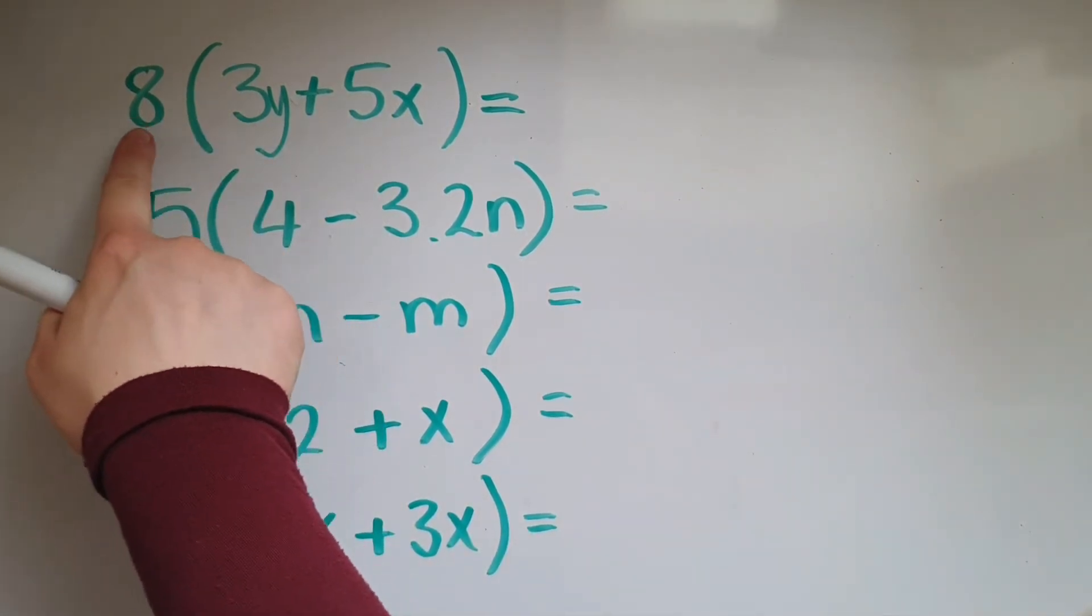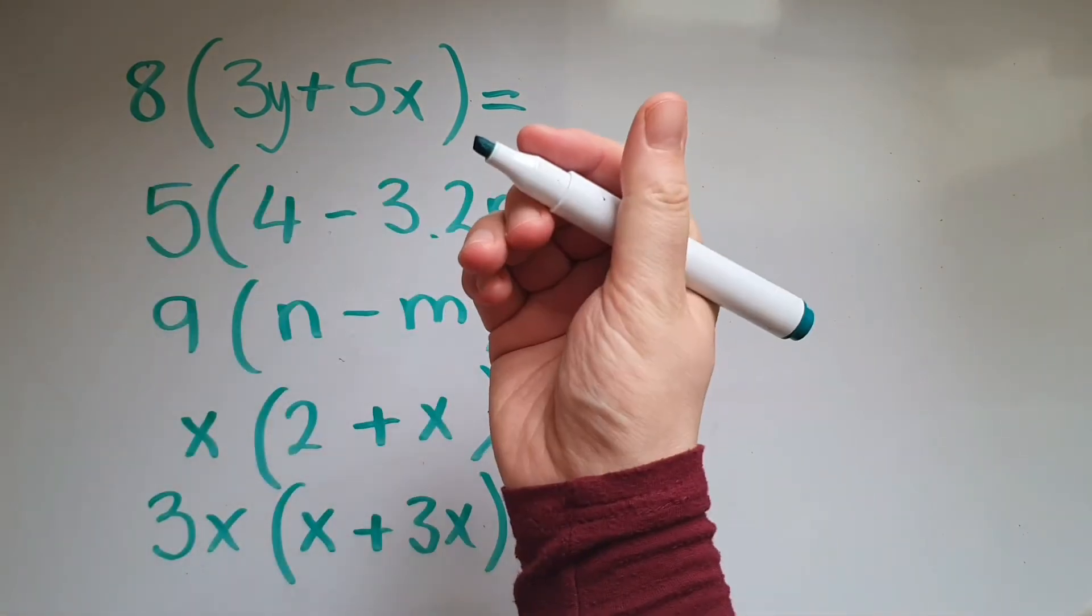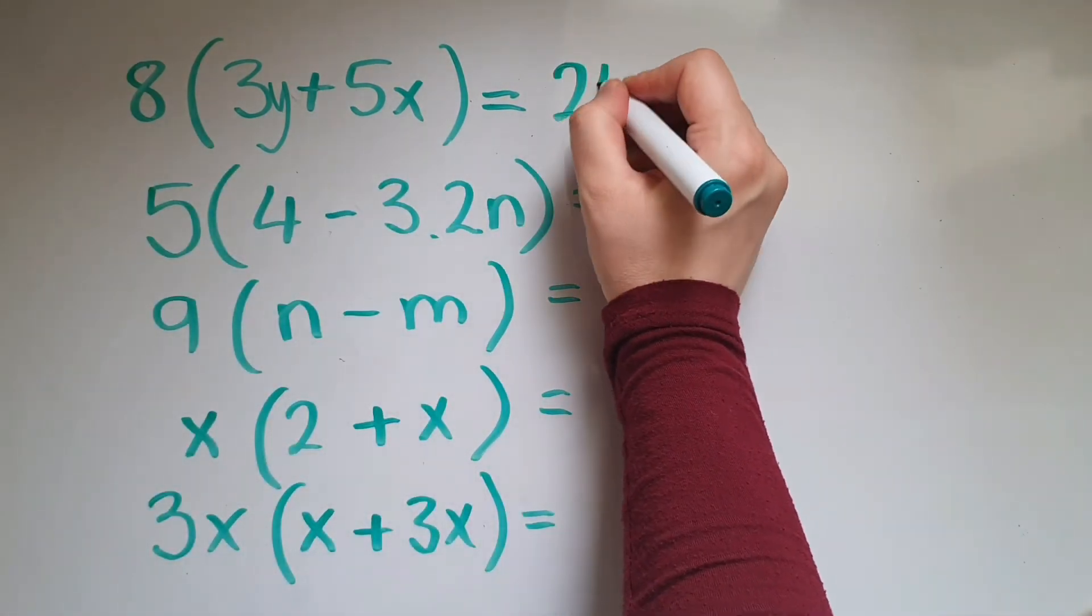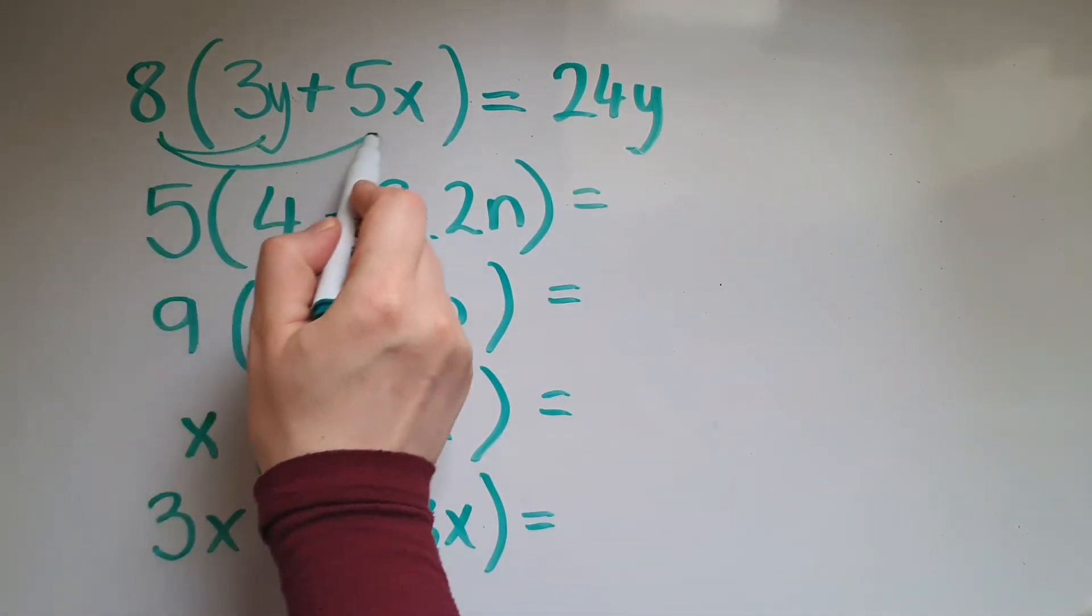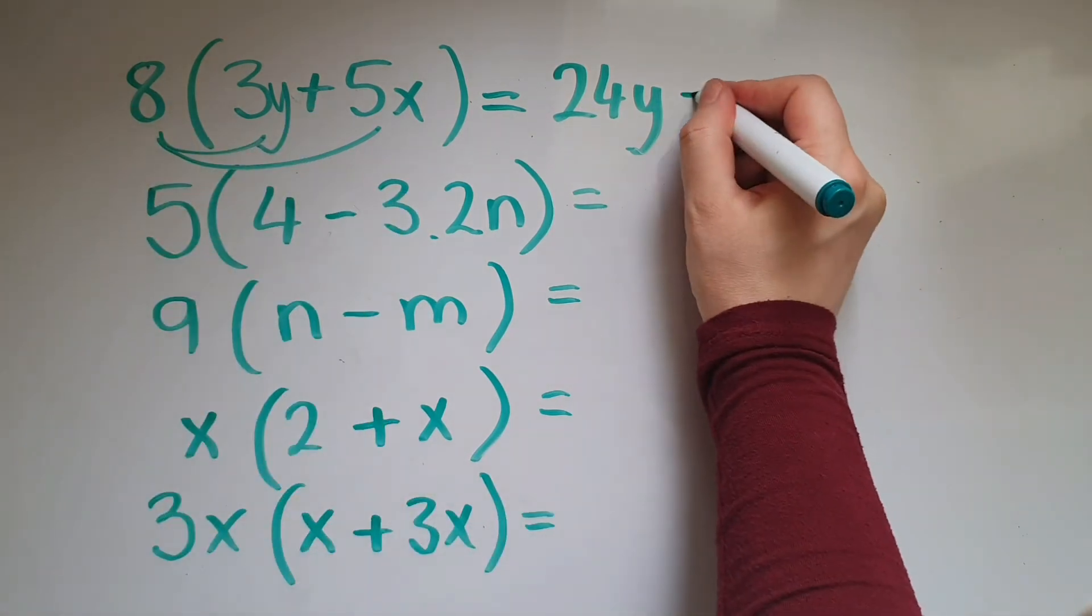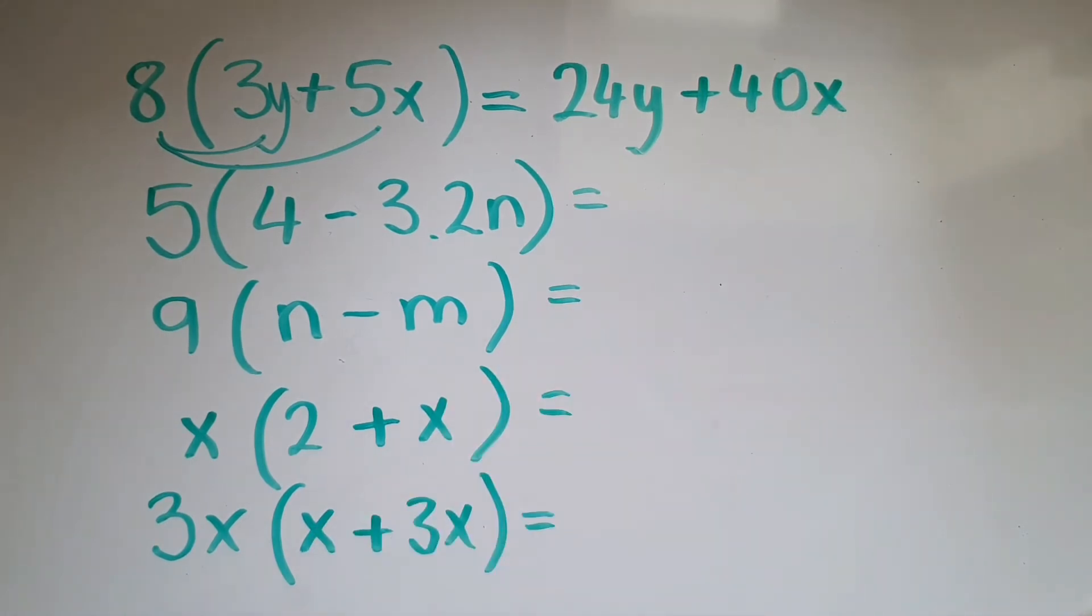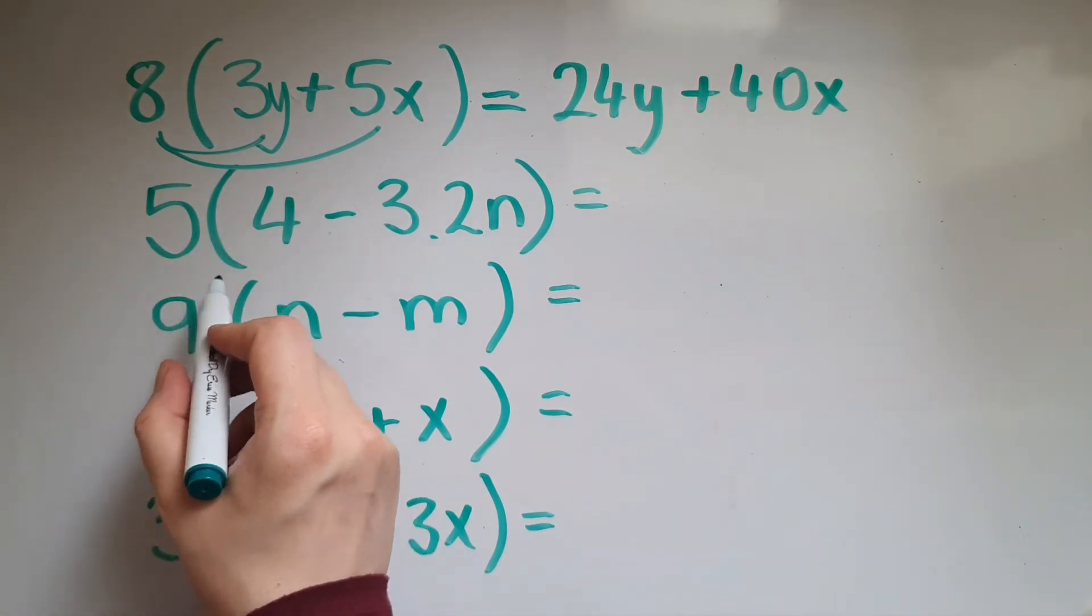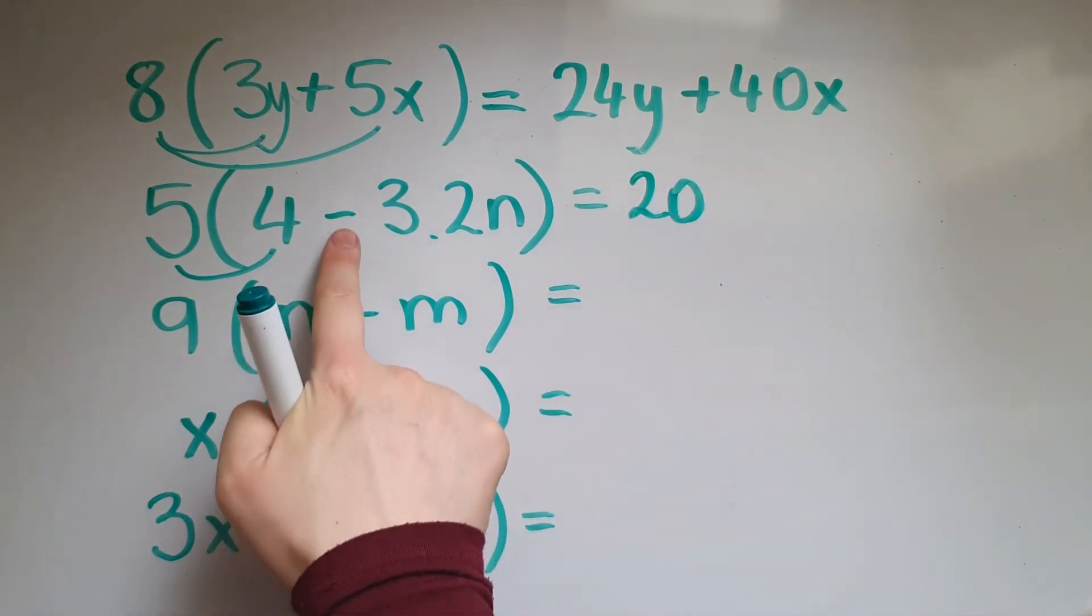Multiplying out 8 times 3y, that is going to be 24y. Now multiplying 8 by 5x, so 8 times 5 gives us 40, so 40x. 24y plus 40x. Looking at this one, we've got 5 times 4 which is 20.